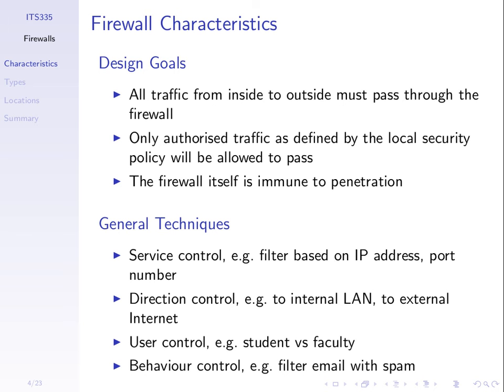We identify the IP addresses of popular game servers and set up the firewall so any packet going to one of those IP addresses is blocked — not allowed out. As a result, computers inside cannot access game servers outside, effectively stopping users from playing those games. We need policies to define what we want to achieve. An important point: the firewall cannot be compromised. The firewall is a security device — if an attacker can compromise it, they can control what goes in and out and potentially gain access to the network. So it's important for the firewall to be protected from penetration.